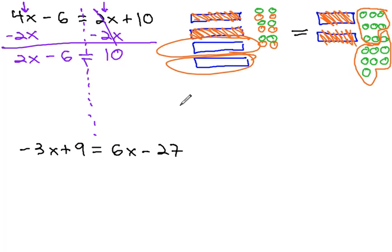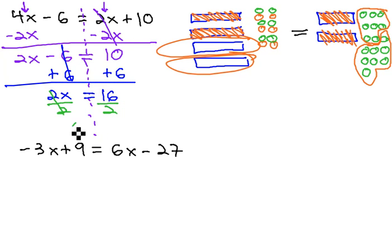Now, it's a simple two step equation, which we can solve in much the same way we did before, by adding six to both sides, giving us two x equals sixteen, and then finally dividing by two, to give us our final answer, x equals eight.